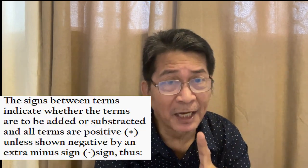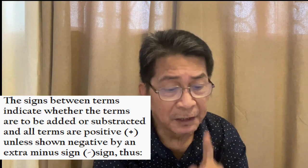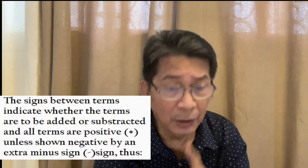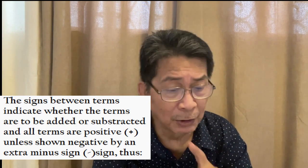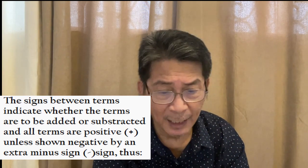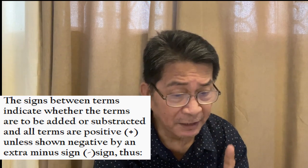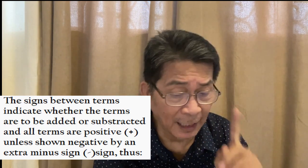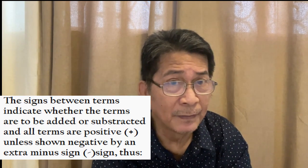a square plus 2a square equals 3a square. Plus signs between terms indicate whether the terms are to be added or subtracted. And all terms are positive unless shown negative by an extra minus sign. Kagaya ng a plus a is equal to positive a plus positive a equals to positive 2a.